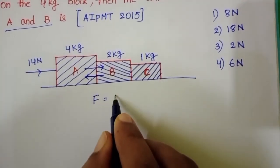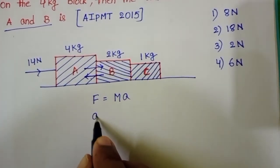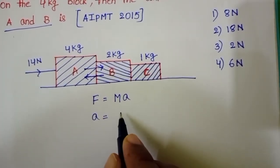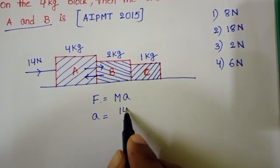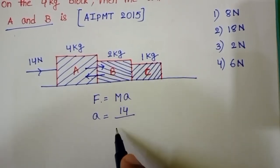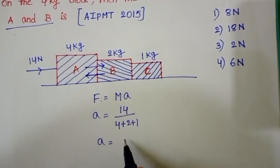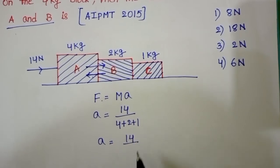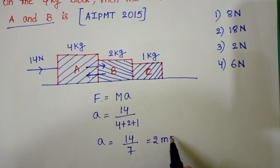Net force equals total mass times acceleration of the system. Acceleration equals force divided by total mass. Applied force is 14 N and total mass is 4 plus 2 plus 1. a equals 14 divided by 7, which equals 2 meters per second squared.